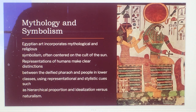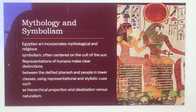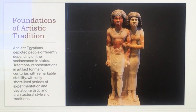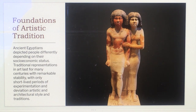Egyptian art incorporates mythological and religious symbolism, often centered on the cult of the sun. Representations of humans make clear distinctions between the deified Pharaoh and people in lower classes, using stylistic cues such as hierarchical proportion and idealization versus naturalism — meaning important figures are shown larger and idealized to look better than they would naturally. These traditional representations lasted for many centuries with remarkable stability, with only short-lived periods of experimentation.